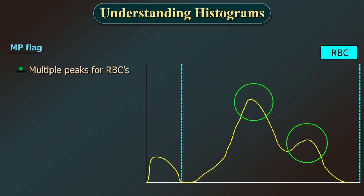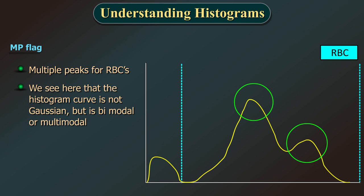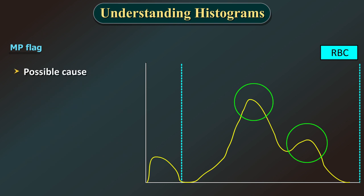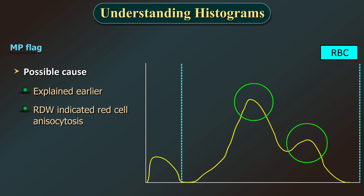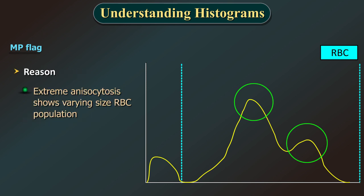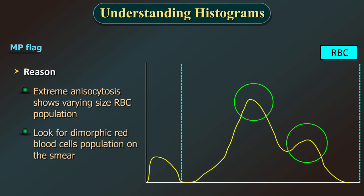MP flag (multiple peaks for RBCs): the histogram curve is not Gaussian but is bimodal or multimodal. This also results in flagging of RBC count, MCV, and RDW. Possible cause: as RDW indicates red cell anisocytosis, deficiency anemias on treatment or post-transfusion with marked anisocytosis of RBCs can show varying size RBC populations. Look for dimorphic red blood cell populations on the smear.